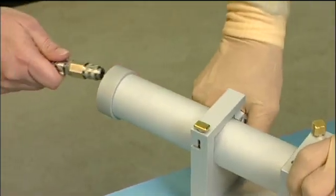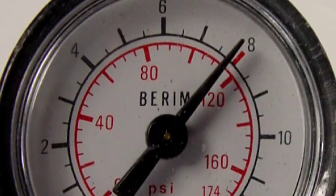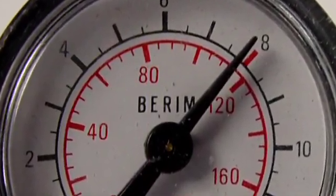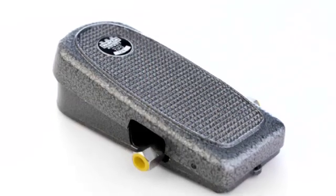The hose of the air supply is connected to the motor by means of a quick coupling. Required pressure is 5 to 8 bar or 70 to 120 psi. Air supply is controlled by means of a foot pedal.